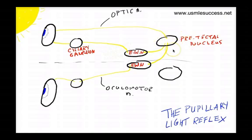In moving to the pretectal nucleus, it's going to bypass the lateral geniculate nucleus. From the pretectal nucleus, we get axons sent to both the right side and the left side Edinger-Westphal nuclei.